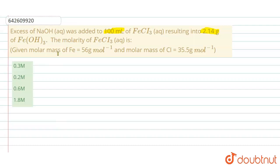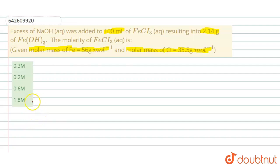What we have to find is the molarity of FeCl₃ (aq). The additional information given is: molar mass of Fe equals 56 g/mol and molar mass of Cl equals 35.5 g/mol. Now, how do we solve it? First, we write the reaction of FeCl₃ with NaOH.